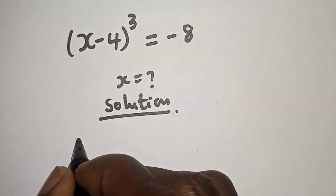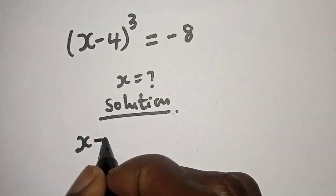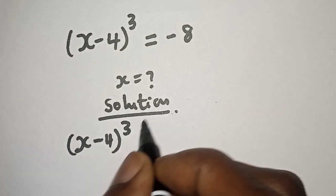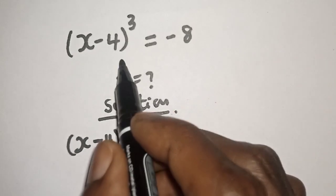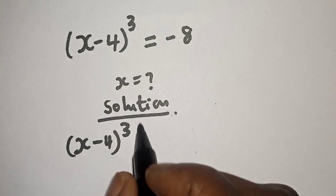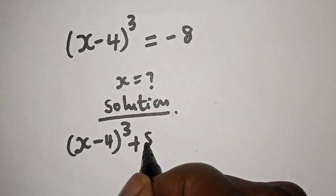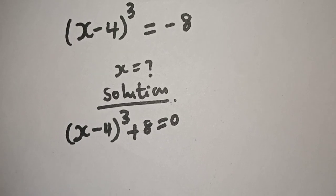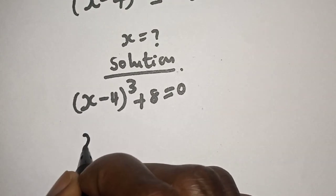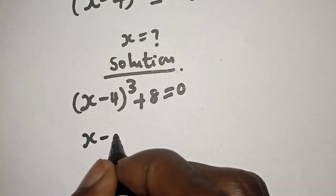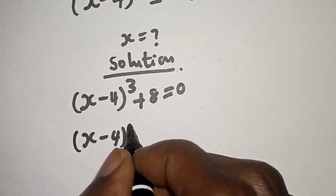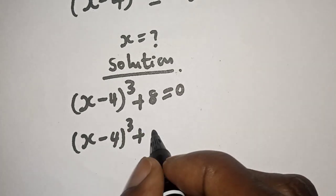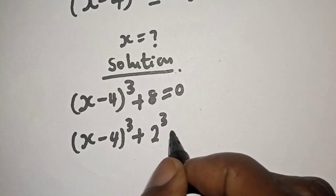We have x minus 4 raised to power 3. If this minus is crossed to the other side, we get plus 8 is equal to 0. Then, x minus 4 raised to power 3 plus 8 can be written as 2 raised to power 3 is equal to 0.